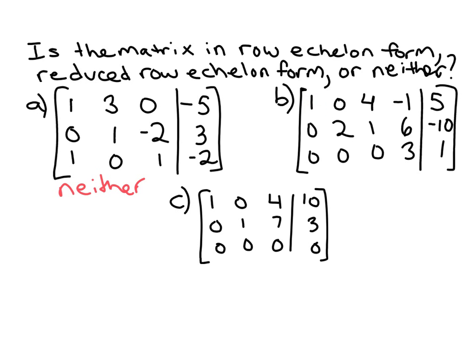That's great with the one here, that's the only non-zero entry in that column. Here's the pivot for row two, and yes, it's the only non-zero entry in that column. But the pivot in row three is the three here.